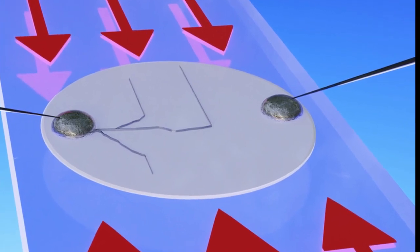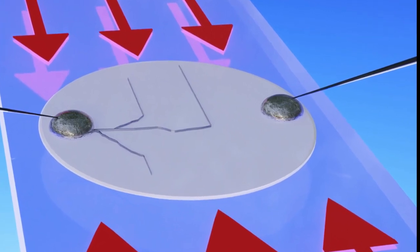But that approach has been beset with one big problem: dendrites. Dendrites, whose name comes from the Latin for branches, are projections of metal that can build up on the lithium surface and penetrate into the solid electrolyte, eventually crossing from one electrode to the other and shorting out the battery cell.